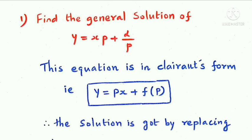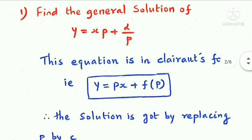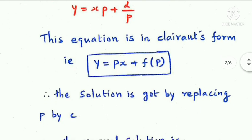First question: find the general solution of y = xp + α/p. This equation is in Clairant's form, that is the form y = px + f(p).